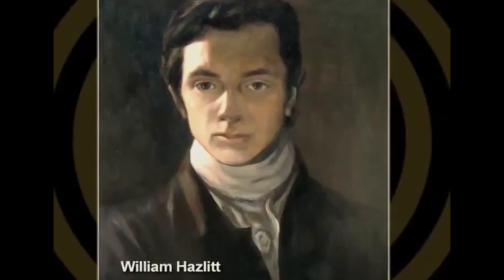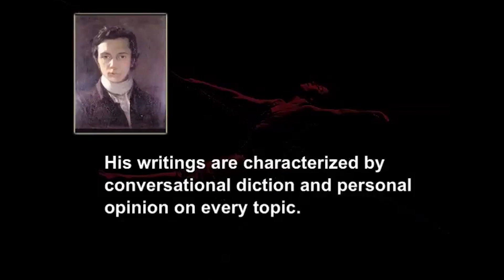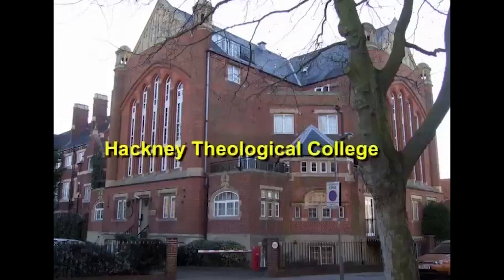William Hazlitt was one of the leading prose writers of the Romantic period. He was an essayist, a literary critic, a social commentator, a biographer, a philosopher, and also a painter. His writings are characterized by conversational diction and personal opinion on every topic. Hazlitt was born in 1778. His father was a dissenting minister who hoped his son would be his successor, but the boy showed little inclination for that vocation. In 1793, Hazlitt was admitted to the Hackney Theological College, where he acquired acquaintance with free-thinking men and began to feel personally interested in the art of painting.